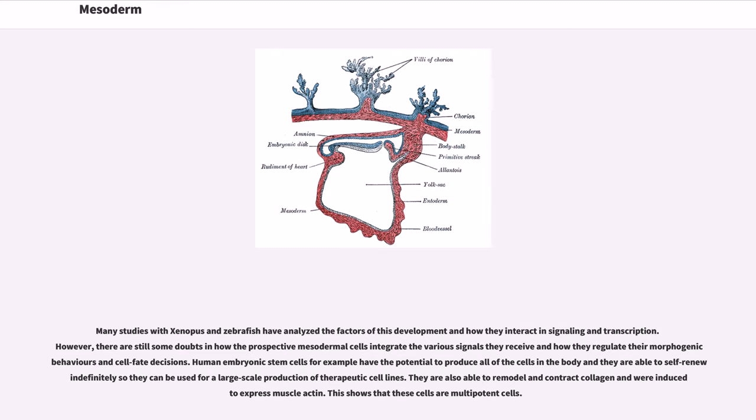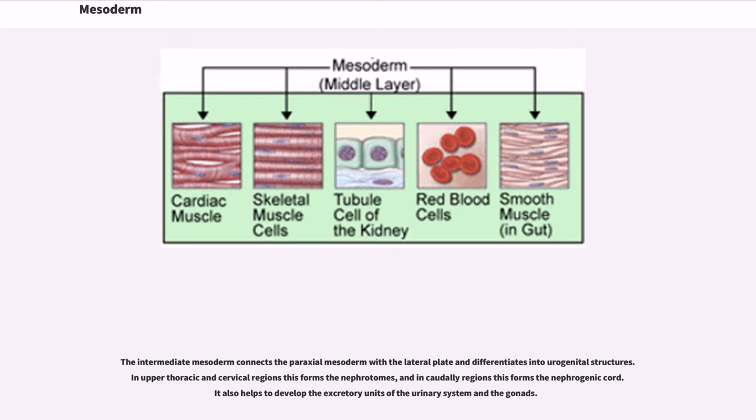The intermediate mesoderm connects the paraxial mesoderm with the lateral plate and differentiates into urogenital structures. In upper thoracic and cervical regions this forms the nephrotomes, and in caudal regions this forms the nephrogenic cord. It also helps to develop the excretory units of the urinary system and the gonads.